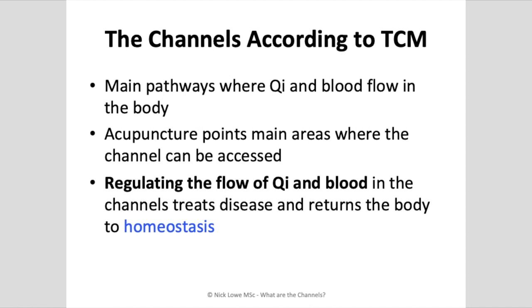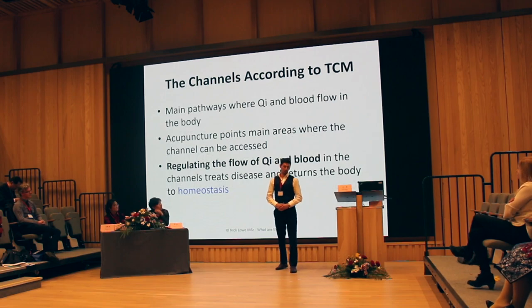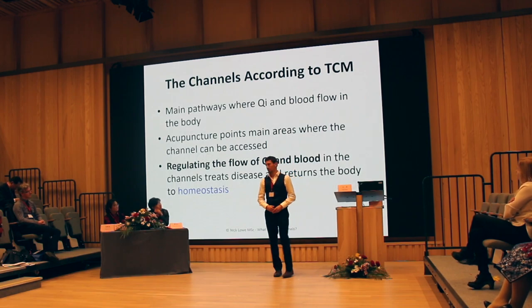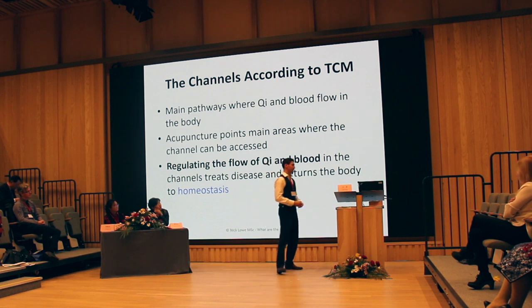The acupuncture points are the main nodes or areas where we can affect the flow of qi and blood in the channels. And really the central premise of treatment is that by needling, tuina, and using our various treatment modalities, by regulating this flow of qi and blood, we can treat disease and return the body to health and homeostasis.